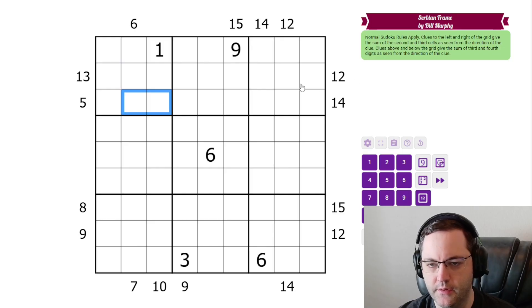On this side, the 12 is saying these two cells, second and third away from the 12. For the top and bottom, it's the third and fourth cells. So these sum to six, these sum to 14, these sum to 10, and so on. And those are the rules.